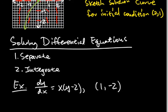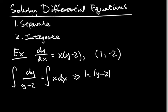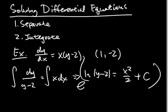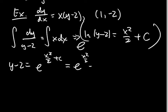To actually solve these, remember two words: separate, integrate — they rhyme, so easy to remember. In AP Calculus, you'll always be able to separate the differential equation. Move all the y's and dy to one side and all the x's and dx to the other, then integrate both sides. We get ln|y minus 2| equals x²/2 plus C. The plus C is important. Exponentiate with base e to cancel ln, giving y minus 2 equals e^(x²/2 + C).